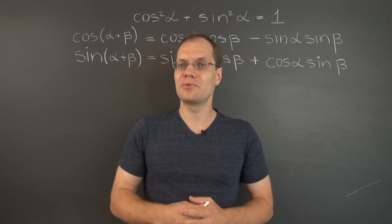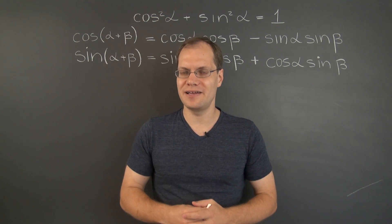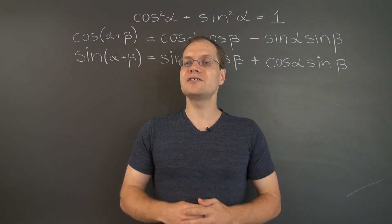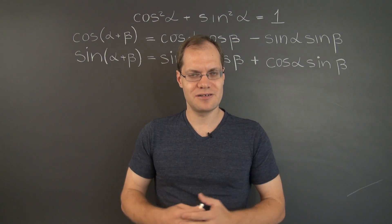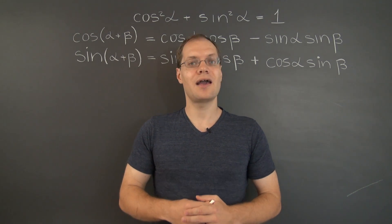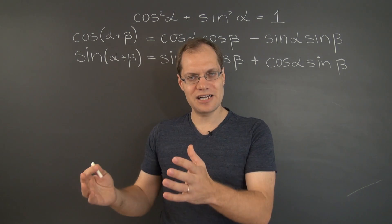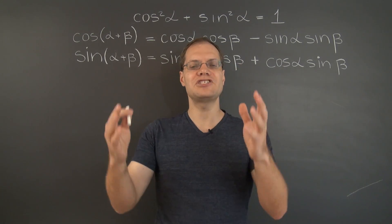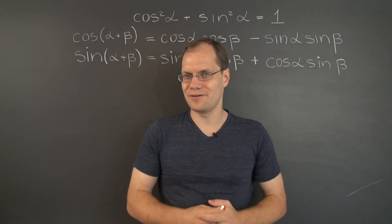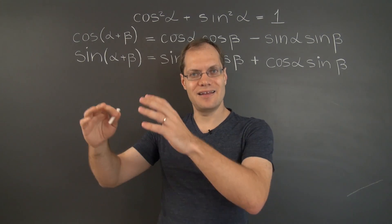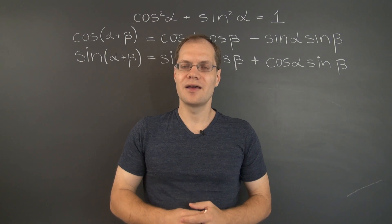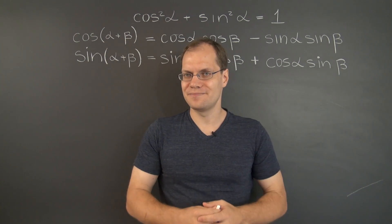Alright, please ignore the trig on the board, which is for another video. So the question that I'd like to ask you today requires familiarity with the concepts of rational and irrational numbers. And the question is: can an irrational number to an irrational power be a rational number?